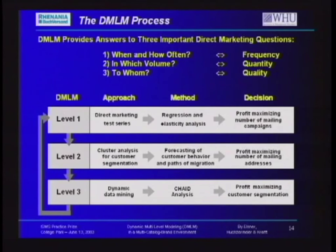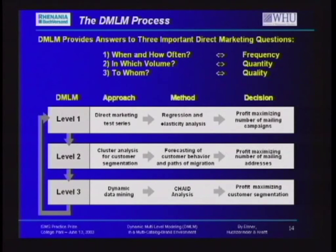In the Level 2 analysis, the pool of customers needs to be segmented. In Renanya's case, customer segmentation was based on actual buying behavior measured by the recency of the last purchase. Renanya must decide dynamically whether to include or exclude particular customer segments from the next mailing campaign — that is, it must select the profit-maximizing number of mailing addresses. In the Level 3 analysis, the firm can further fine-tune its mailing strategy by analyzing whether customers who belong to a particular segment should be demoted and treated in a special way.